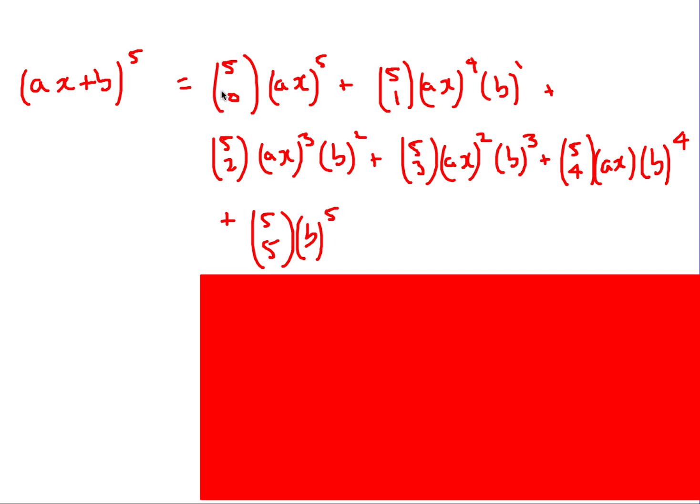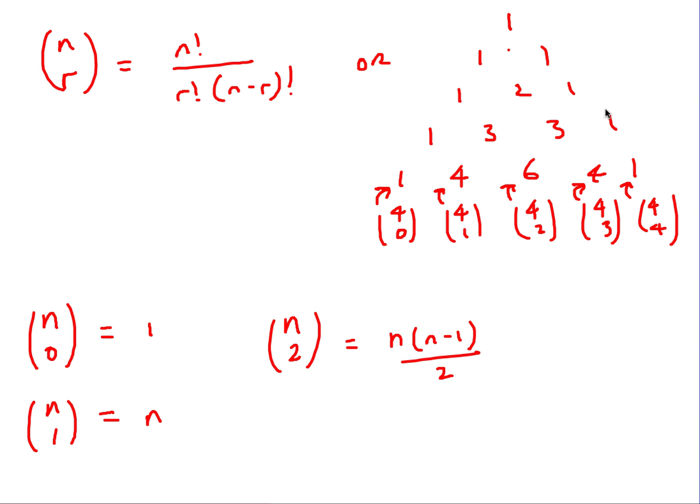Obviously then we need to use a calculator, what 5 choose 0 is, and then obviously just remember that we've got a to the power of 5, ax to the power of 5, and so on. So that's kind of the pattern that we're going to be following. The other thing just to be aware of, this is the formula for n choose r. Don't really need it for certainly for additional, even for standard level, it very rarely comes up.